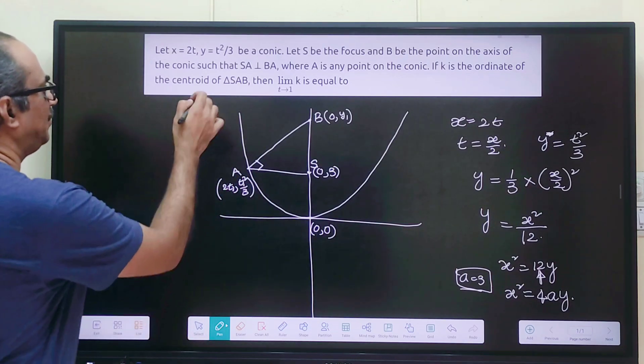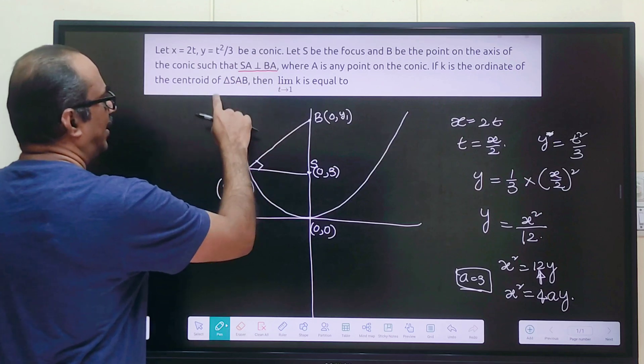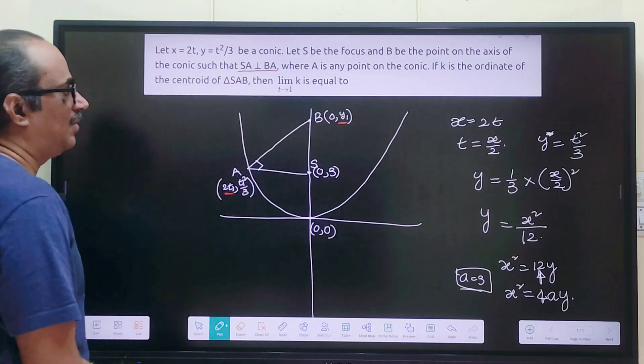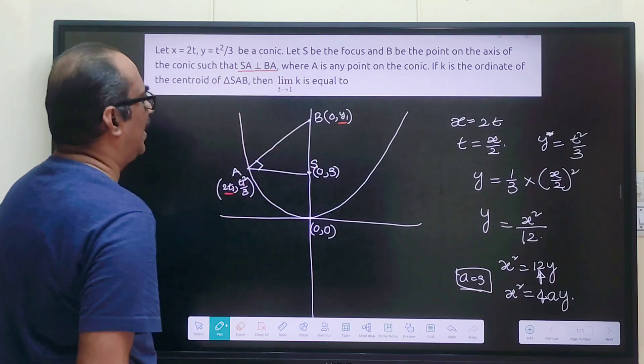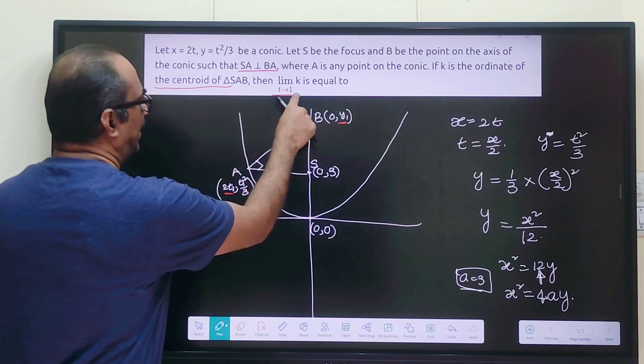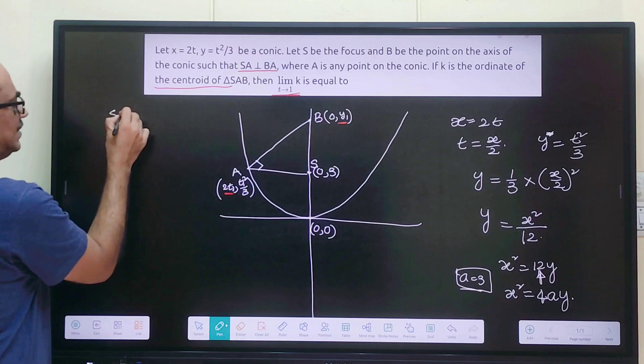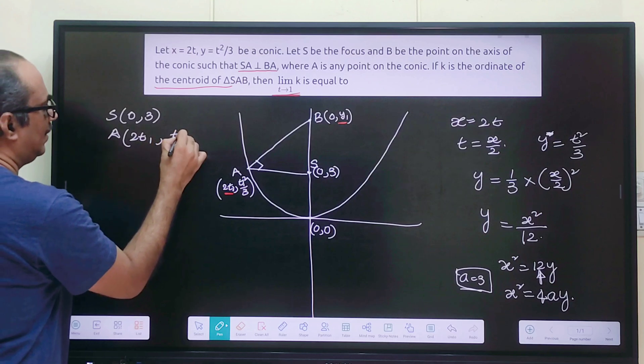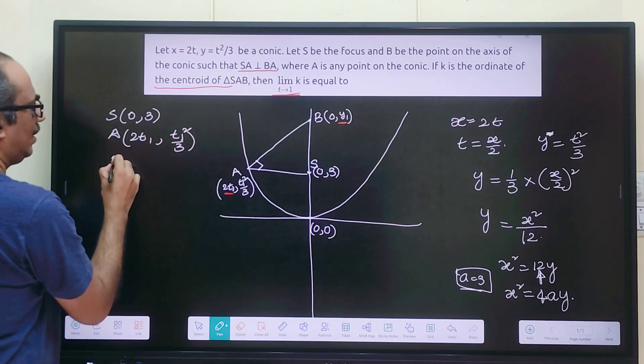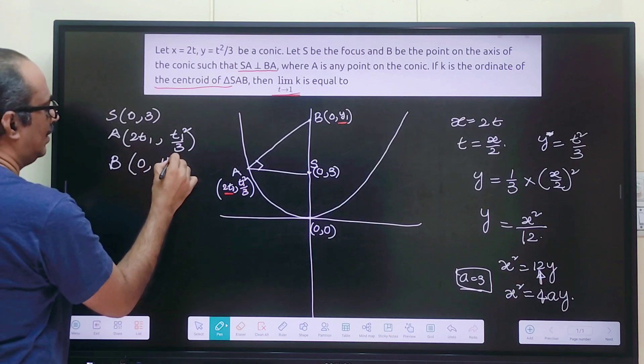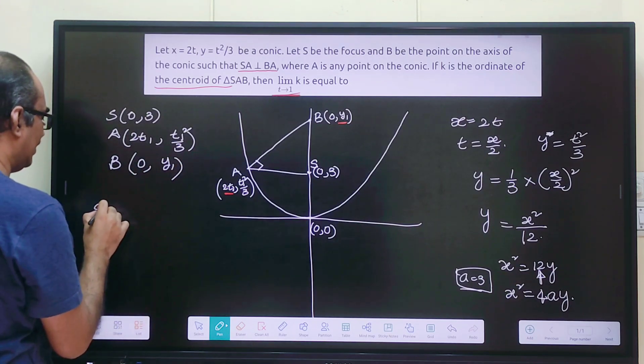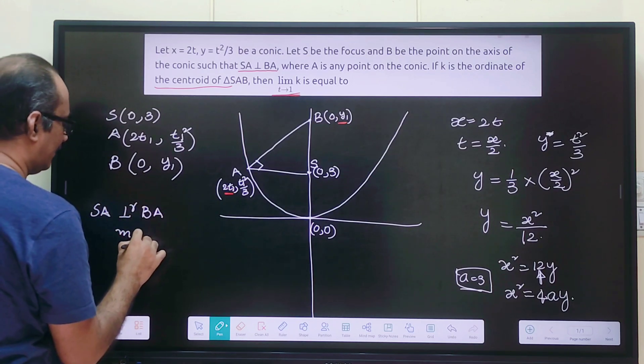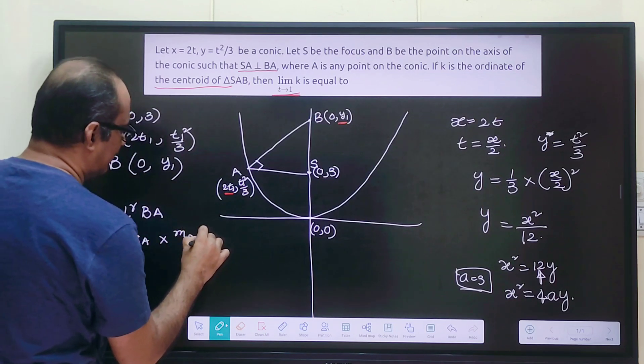Now we got SA perpendicular to BA. So we can use this and find out the relation between y₁ and t₁. Then we can go to the next condition where they said k is the ordinate of centroid of triangle SAB. First let us write down what we know. S is (0,3), A is (2t₁, t₁²/3), and B is (0, y₁). We have been told that SA perpendicular to BA. So let us do that.